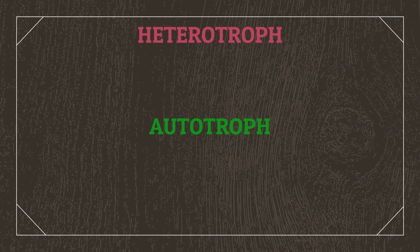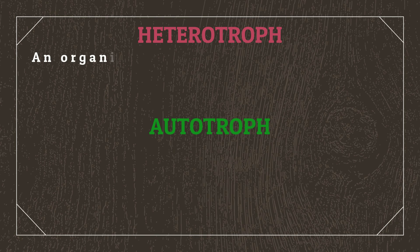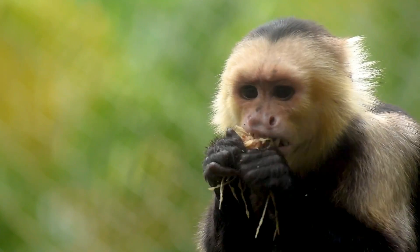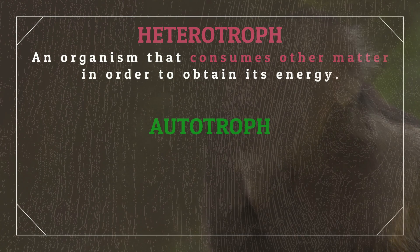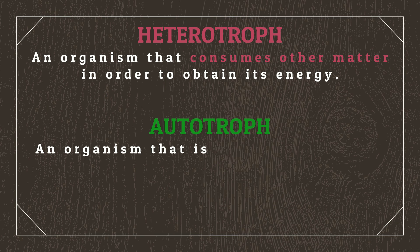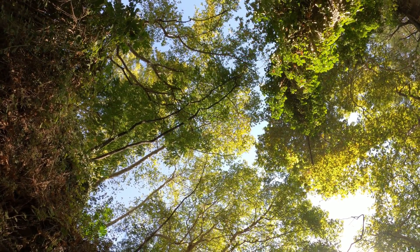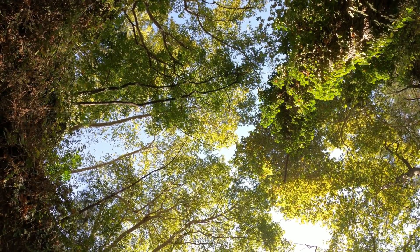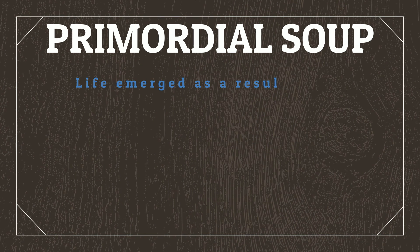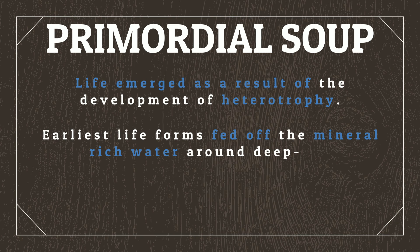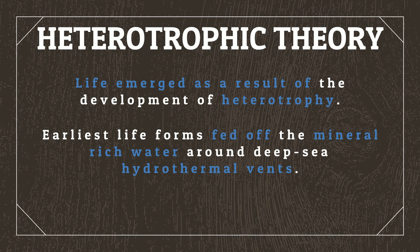To better understand the Primordial Soup Hypothesis, we first have to discuss heterotrophs and autotrophs. A heterotroph is an organism that consumes other matter in order to obtain its energy — we as humans, as well as all animals, are heterotrophs. Autotrophs, by contrast, are able to create their own food source from raw energy and materials; the most well-known real-life autotrophs are plants, which use photosynthesis to sustain themselves. The Primordial Soup Hypothesis posits that life emerged as a result of the development of heterotrophy, where the earliest life forms fed off the mineral-rich water around deep-sea hydrothermal vents — referred to in modern science as heterotrophic theory.